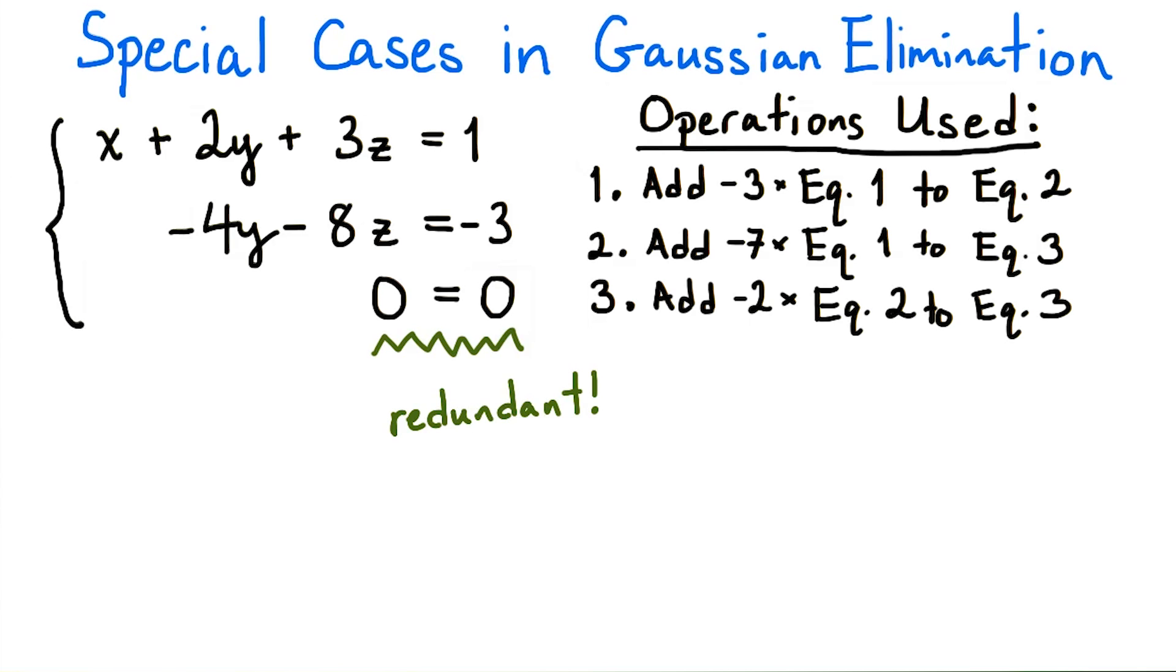Well, since 0 always equals 0, regardless of what x, y, and z are, the last equation becomes redundant. The system would have the exact same solution if we dropped it altogether. This is how to interpret an equation of the form 0 equals 0. The row it occupies was originally a redundant equation. It gives no extra information about the solutions that was not contained in the equations above it.